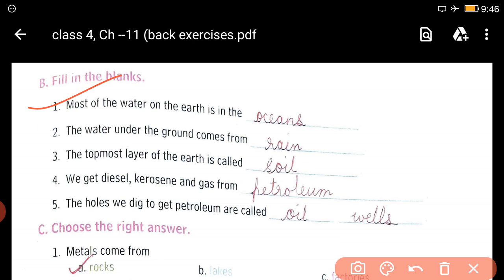First, fill in the blanks. Most of the water on the earth is in the oceans. Second, the water under the ground comes from rain. When it rains, some water goes into the ground. That is groundwater.